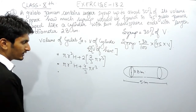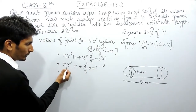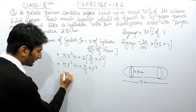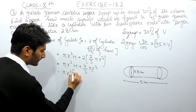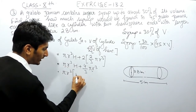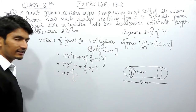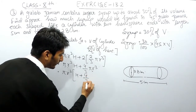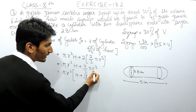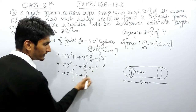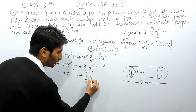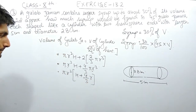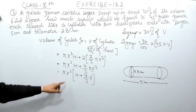Instead of solving this directly, I can take πr² as common from both terms. Taking πr² common, from the first expression only h remains inside the bracket, and from the second expression (4/3)πr³ gives (4/3)r remaining inside. So the volume becomes πr²(h + (4/3)r).